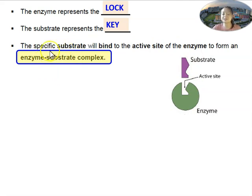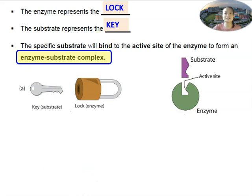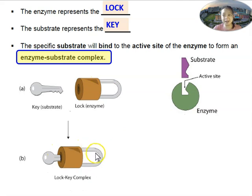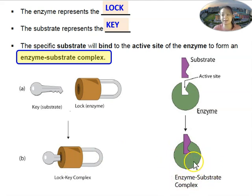When the enzyme combines with the substrate, you form an enzyme-substrate complex. The substrate is the key and your enzyme is the lock. When your substrate combines with your lock, what you get is called an enzyme-substrate complex — not a lock and key complex. Please, in the exam, do not write 'lock and key complex.' It is known as the enzyme-substrate complex.